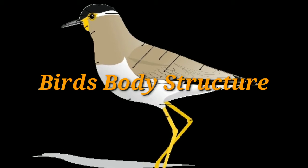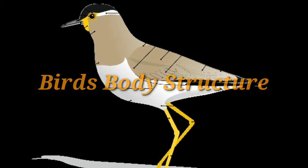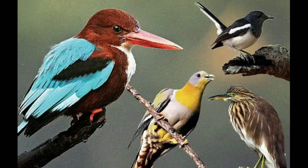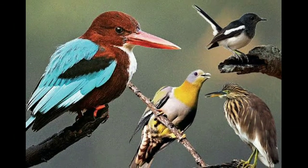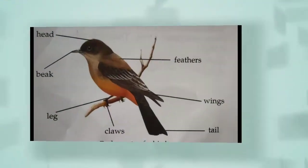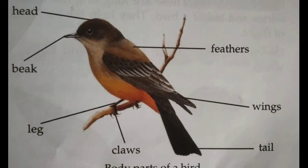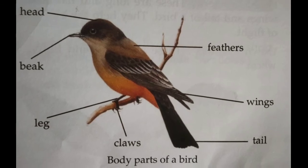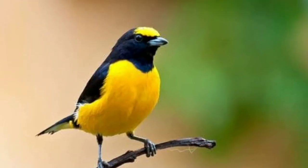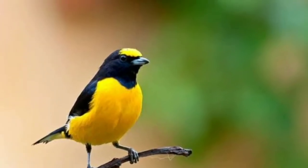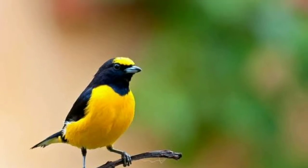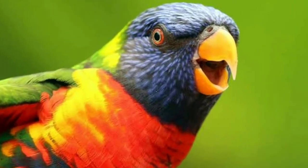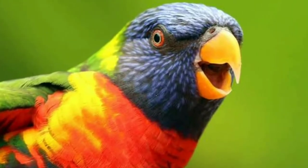Bird body structure. A bird's body structure helps it to fly. Its body consists of head, wings, tail, and legs. Birds have small and fluffy feathers all over their body. They have a beak with no teeth and two holes called nares, or nostrils.